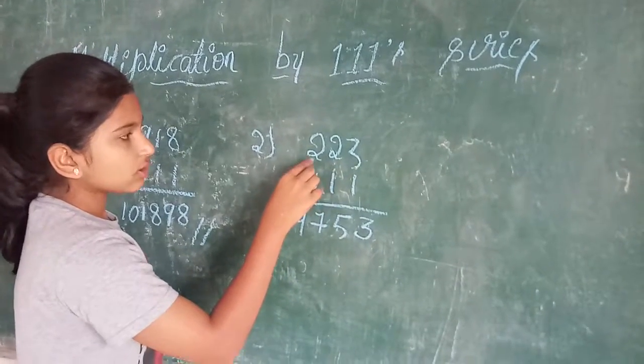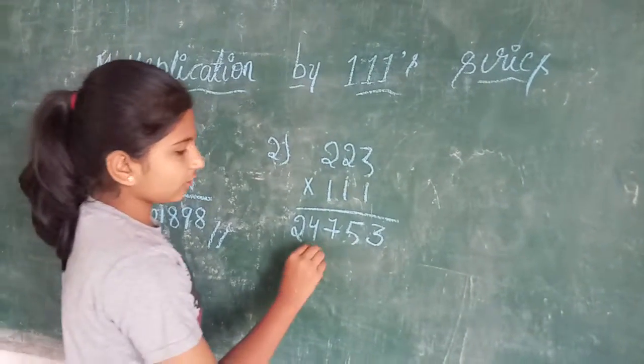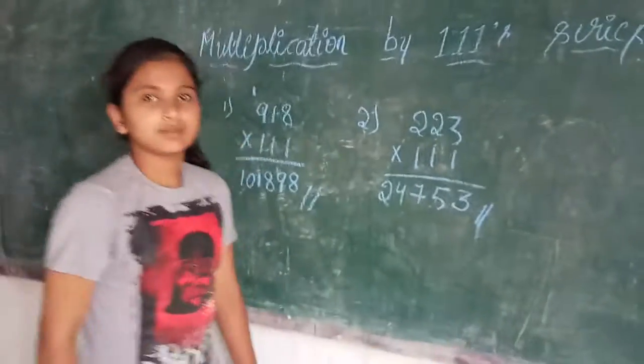Remaining is 2. 2 which I will write as it is. So 24,753 is the answer.